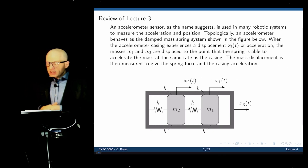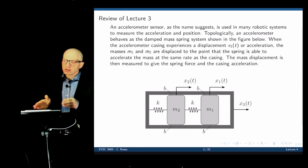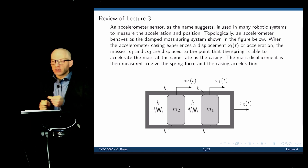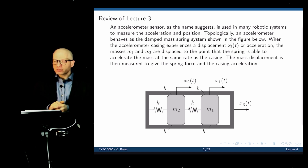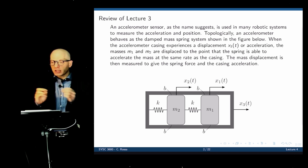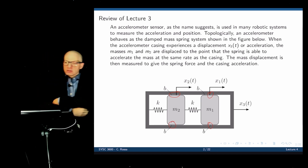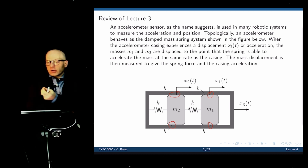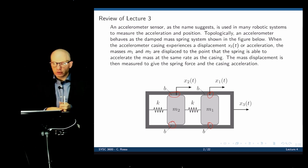Before we jump into that, let's go back to lecture three for a quick review. This is the accelerometer we talked about in the last lecture. We have a casing with two masses inside that are translating inside that casing. They are attached to springs, and there is friction between these masses and the casing at any point of contact.